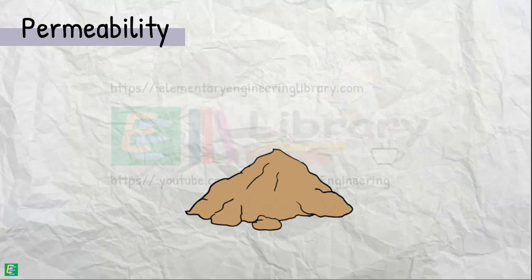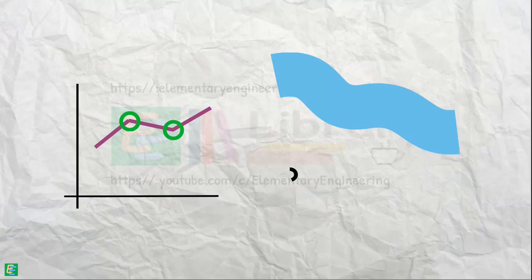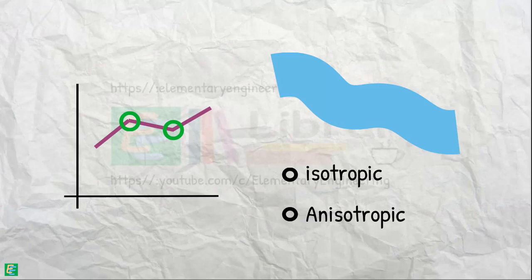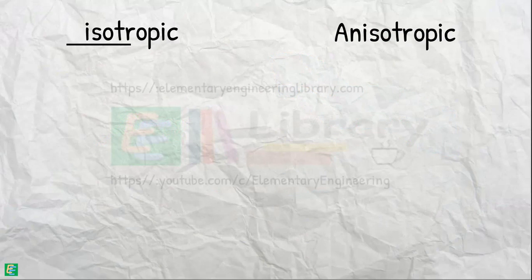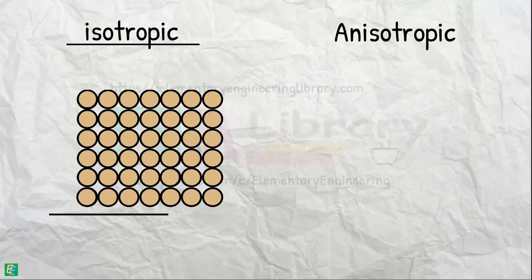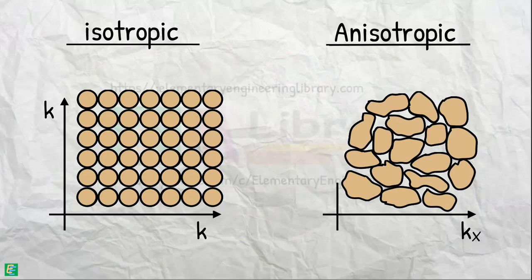Permeability is the ease with which water can flow through the soils. We have analysed the flow of water in both isotropic and anisotropic soil and have learned to construct the flow net. Isotropic means having identical values of a property in all directions, and anisotropic means different properties in different directions.